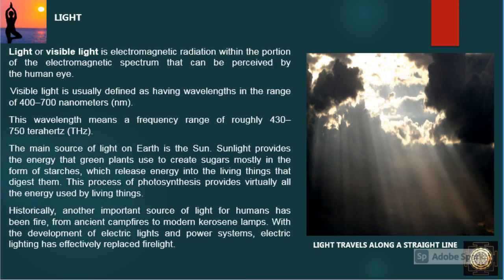Light, or visible light, is electromagnetic radiation within the portion of the electromagnetic spectrum that can be perceived by the human eye. Visible light is usually defined as having wavelengths in the range of 400 to 700 nanometers.